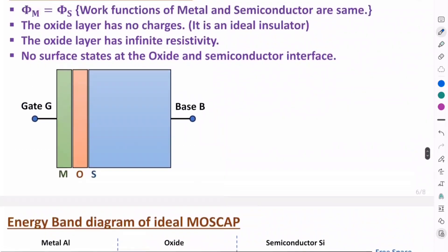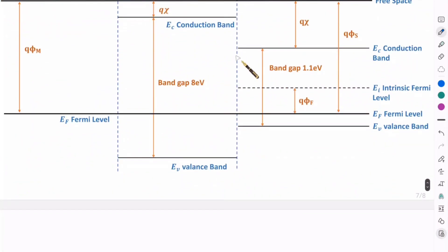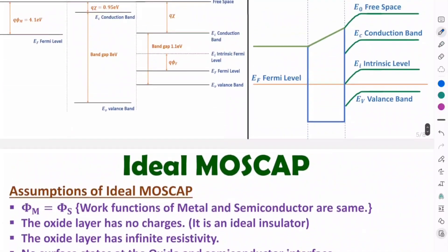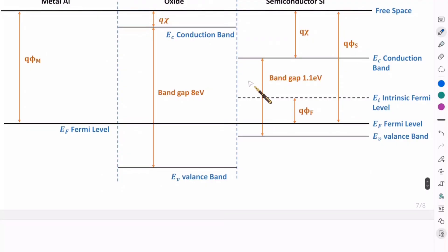The last assumption states that there are no surface states at the junction of oxide and semiconductor. So, as we have no surface states, there will not be any bending of EC, EF, or EV in the semiconductor. Practically, there is bending in the energy band diagram, but here, since this is the ideal case, there is no bending.